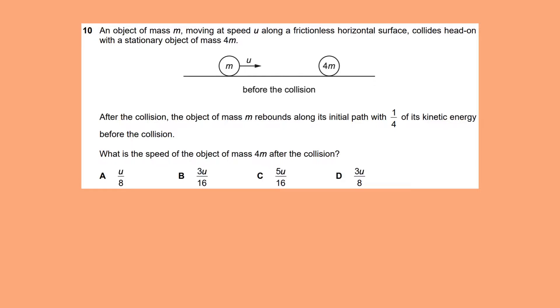So still going on with the same paper. This is summer 23, paper 1-1, question number 10. An object of mass m moving at speed u along a frictionless horizontal surface collides head-on with a stationary object of mass 4m.